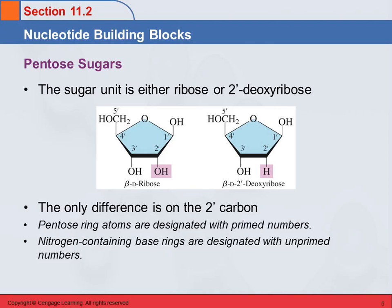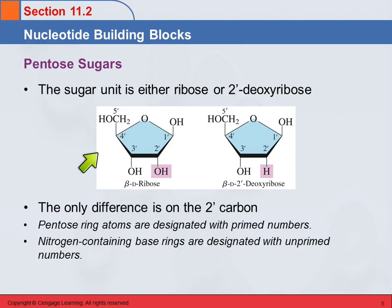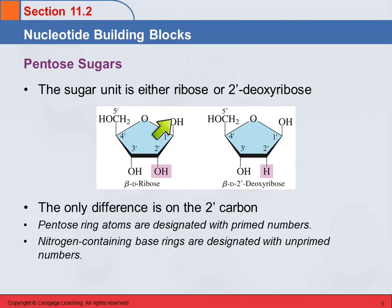So let's look at the sugars first. These are pentoses, and it's either going to be ribose or 2'-deoxyribose. Here's ribose, and this should be somewhat familiar from our study of carbohydrates. This is just the monosaccharide. It's a beta form, meaning that this hydroxy unit on the first carbon is in the up position, and D tells us it's the right-handed enantiomer.